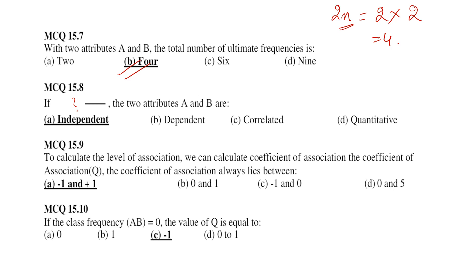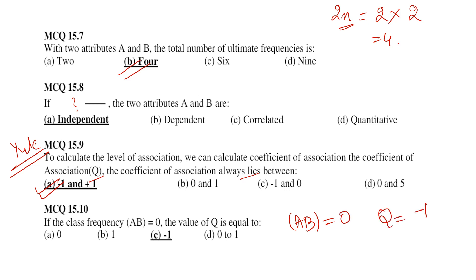To calculate the level of association, we calculate the coefficient of association, denoted by Q. Its value ranges from positive 1 to negative 1. Yule gave the formula for association of attributes and defined different ranges. If the frequency of AB equals 0, then Q equals minus 1.